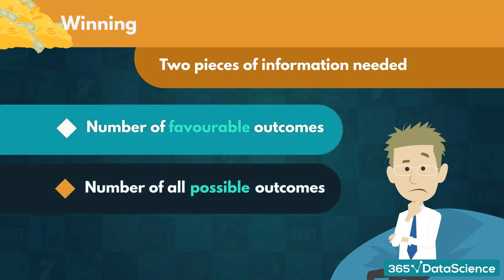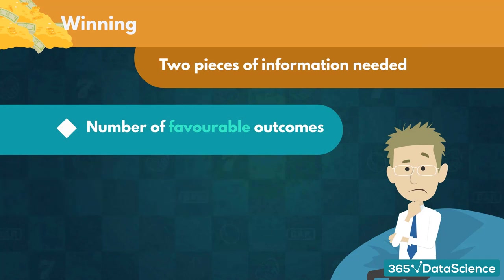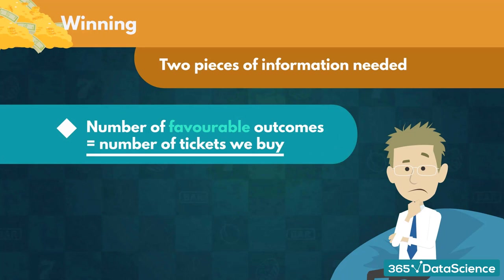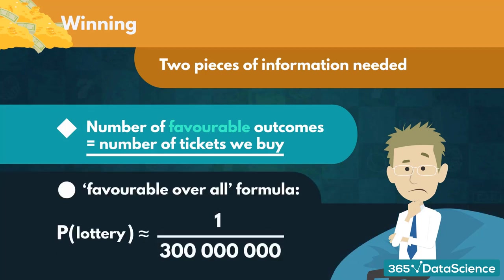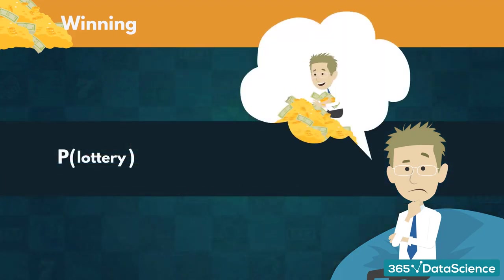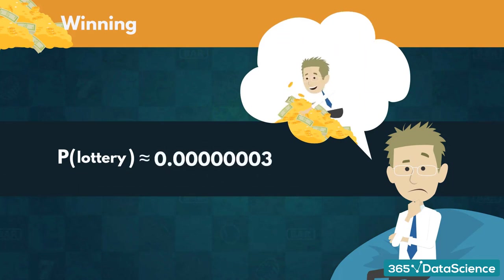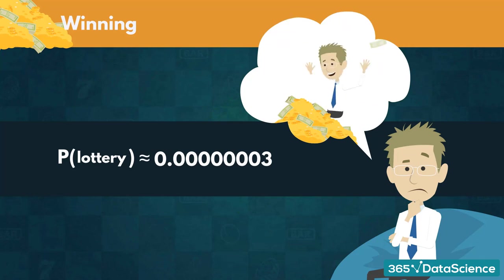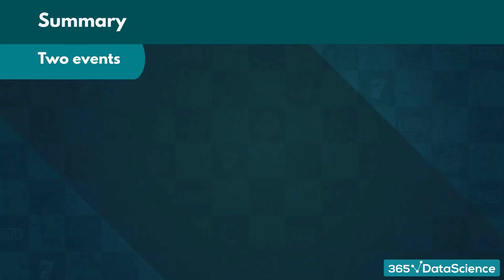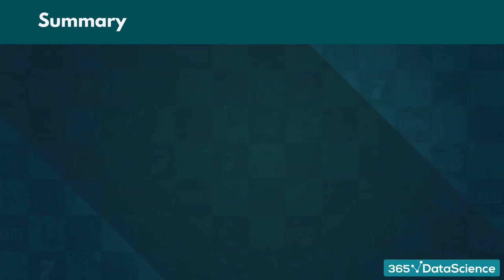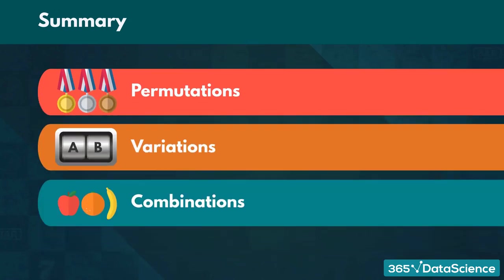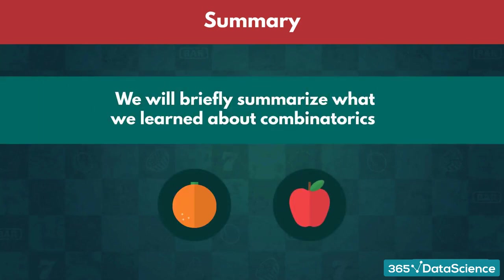What about the number of favorable outcomes? They are going to be equal to the number of tickets we buy. Assuming we participate with a single ticket, the probability of winning the lottery with a single ticket is approximately 0.00000003. We had two events that needed to happen concurrently for us to win: choosing the five numbers, and picking the correct powerball number. With this notion, we more or less exhausted the permutations, variations, and combinations topic.